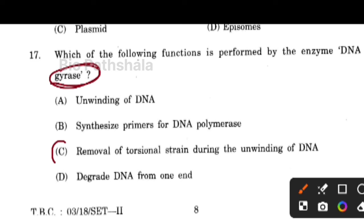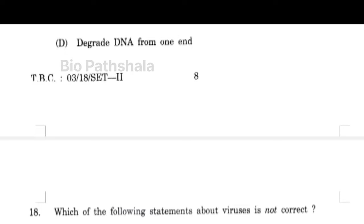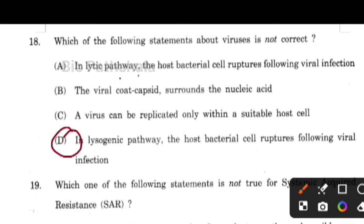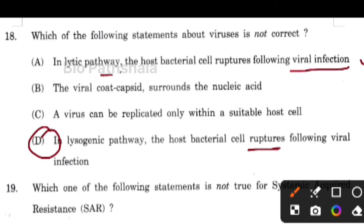DNA has a double helical structure that is coiled; the torsional strain of this coiling needs to be unwound, and these enzymes play an important role in that. Next question: which of the following statements about viruses is not correct? In the lytic pathway the virus ruptures cells and then causes viral infection, but in the lysogenic pathway rupturing is not necessary — the virus can multiply without rupturing. So option D is not correct.